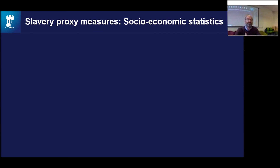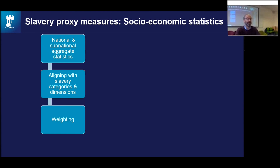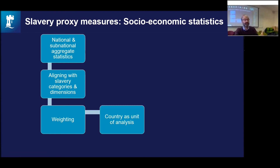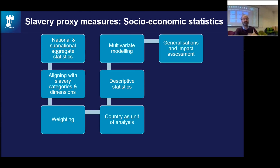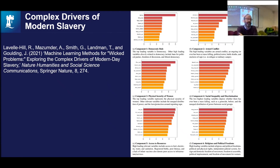Slavery proxy measures can use socioeconomic statistics — national and subnational aggregate statistics aligning with modern slavery categories and dimensions. We used a lot of socioeconomic statistics and the Walk Free prevalence measure to uncover previously unknown drivers of modern slavery in a data science approach. We scraped the web for all sorts of datasets and ended up with 106 different variables, grouped into components like democratic rule, armed conflict, physical security of women, social inequality and discrimination, and other categories. Physical security of women turned out to be one of the main variables not yet identified by previous studies.